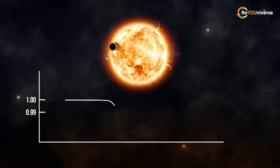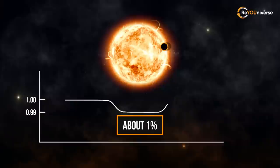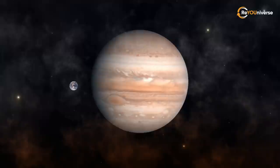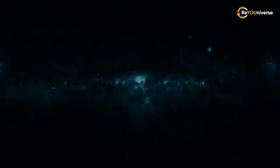A planet the size of Jupiter reduces the star's brightness by about 1%. If we're talking about Earth with a radius 11 times smaller than Jupiter, its signal on the graph will be barely distinguishable.